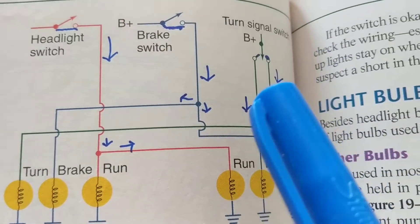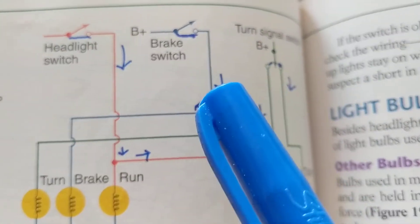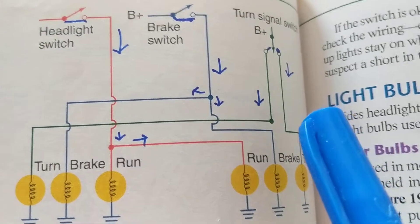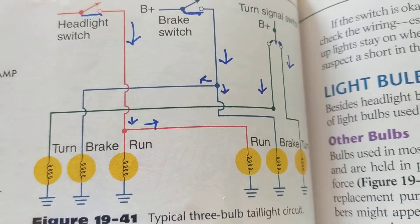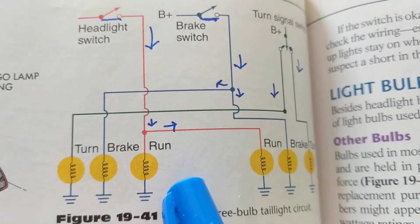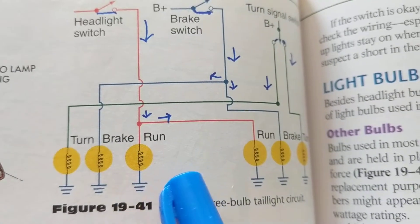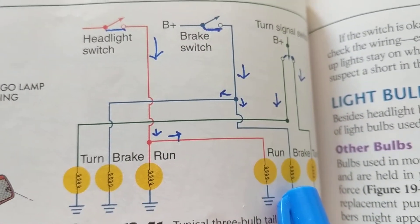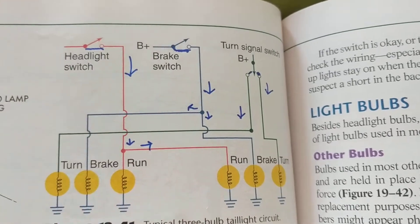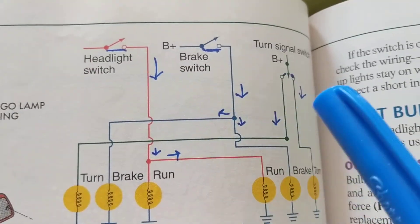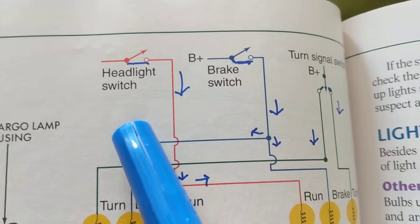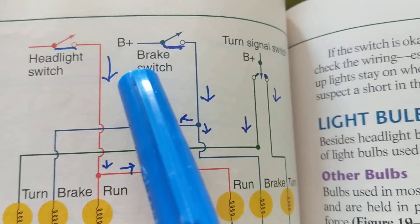When it comes to switches, switches can be in one position or in multiple positions — two positions, three positions. This is referring to the automotive lights, the brakes, and the turn signals. Let's try to figure it out, but first let's understand the simple components of schematics.